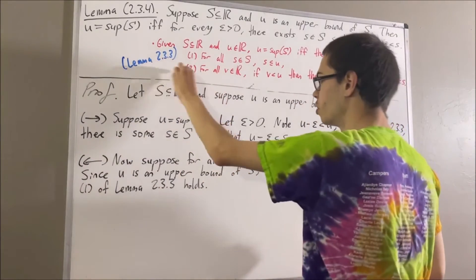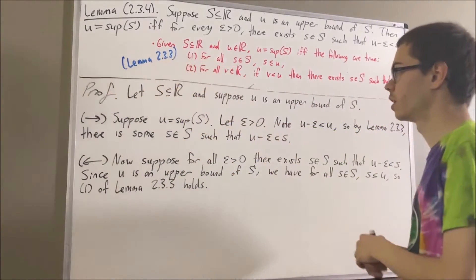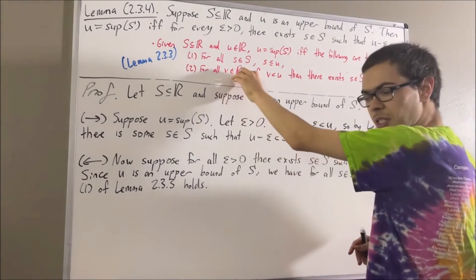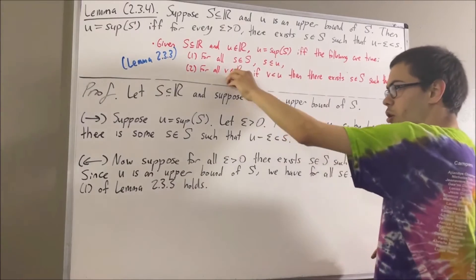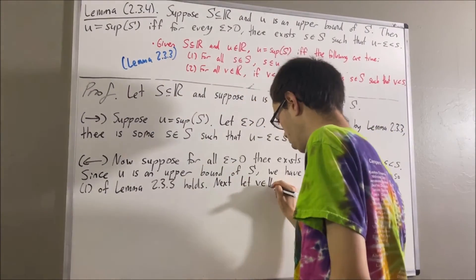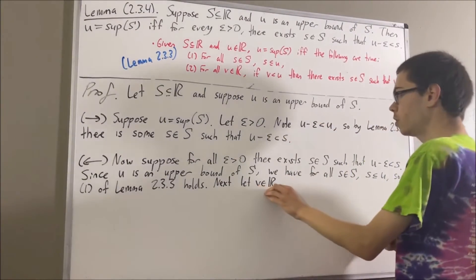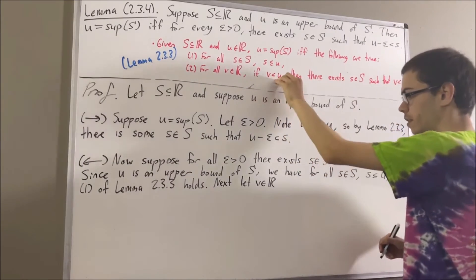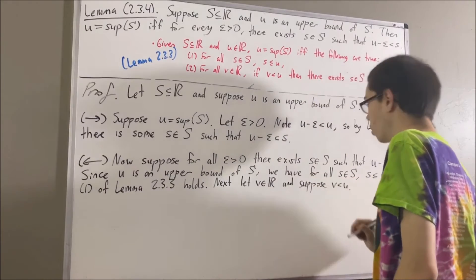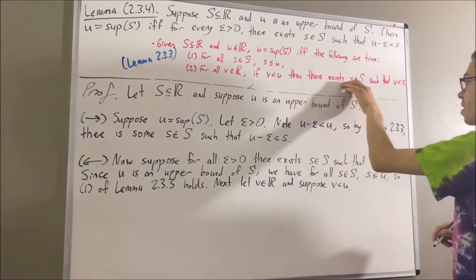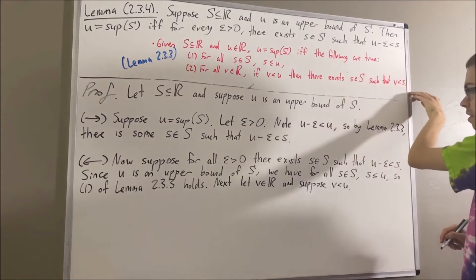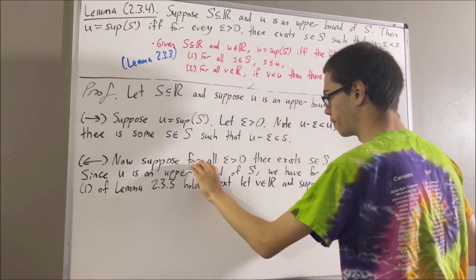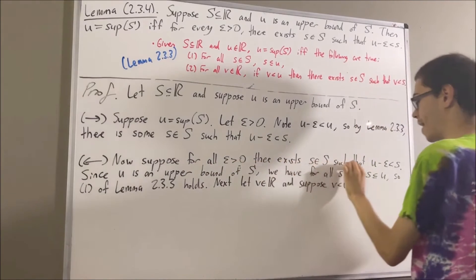All that's left to show is that part 2 of lemma 2.3.3 holds. To do that, we're trying to prove a statement about every real number, so give me an arbitrary real number — I'll call it v. We want to show: if v is less than u, then there exists an s in S such that v is less than s. So let's suppose that v is less than u. From here we want to show there exists an s in S such that v is less than s, and to prove this we're going to apply the epsilon condition, which holds for all epsilon greater than 0.